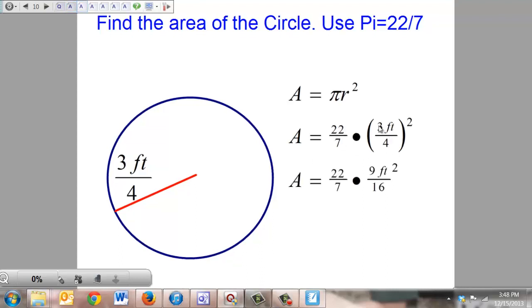When we do that, 3 times 3 is 9, 4 times 4 is 16, feet times feet is feet squared.